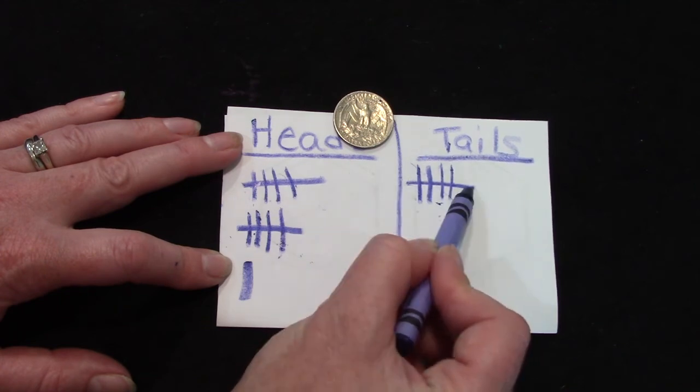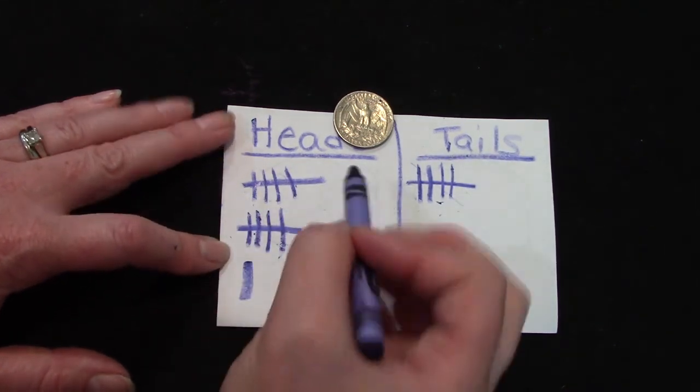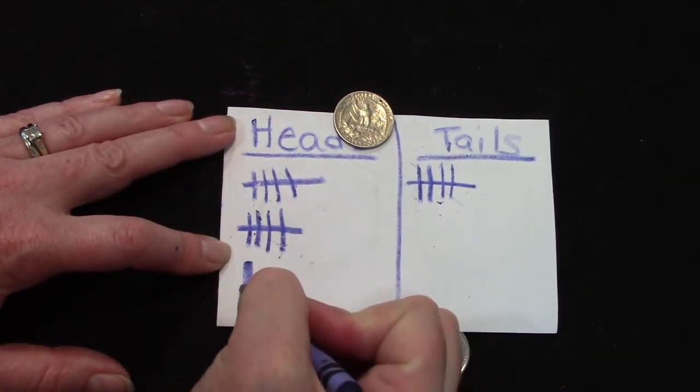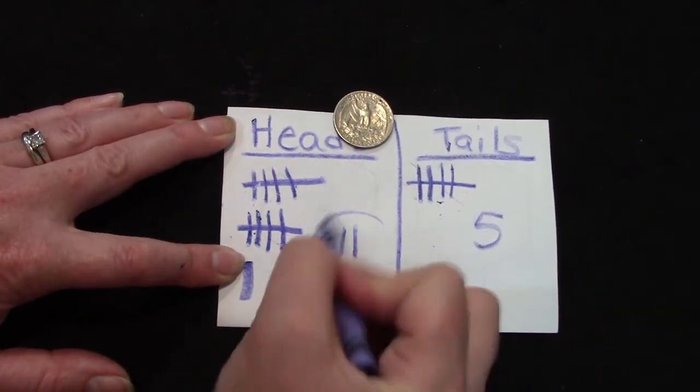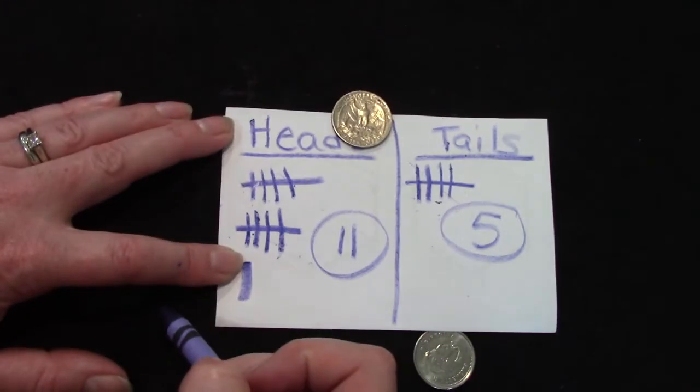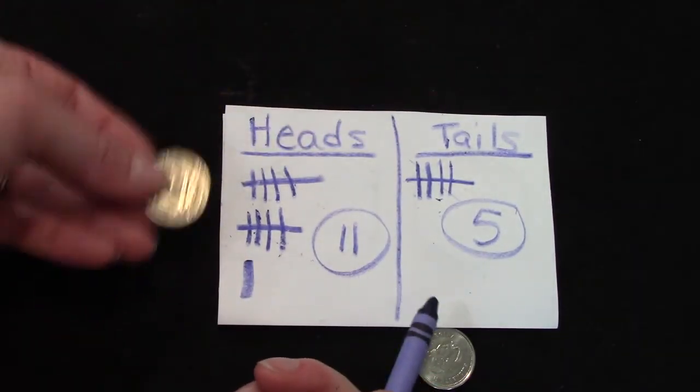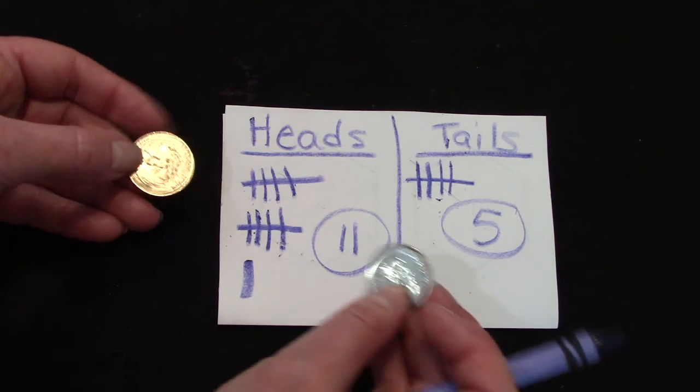One, two, three, four, five. So our score is five, ten, eleven to five. Eleven to five. This sounds like, this looks like it would be a fun game for you to play.